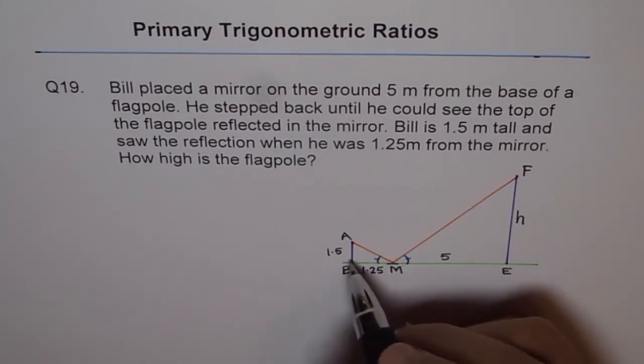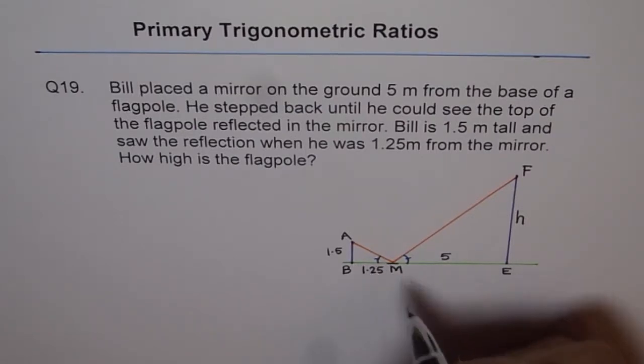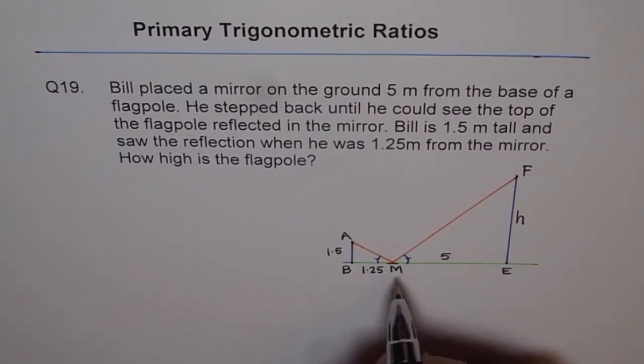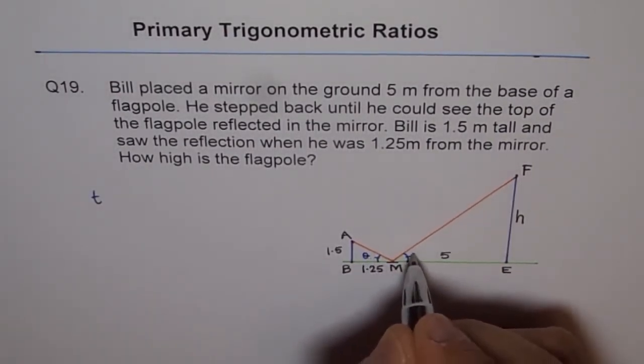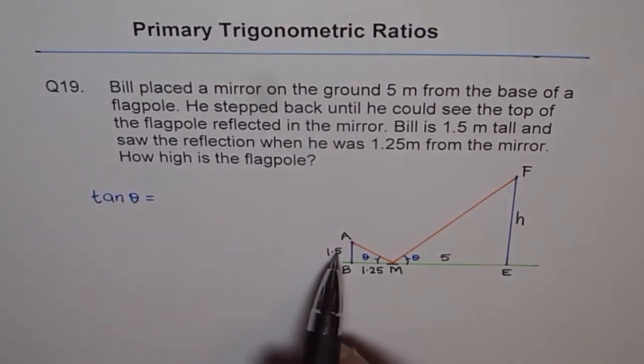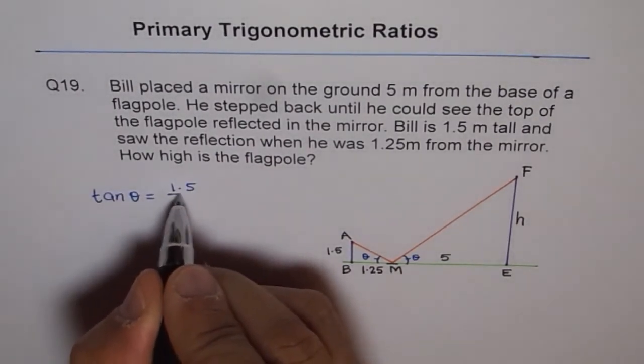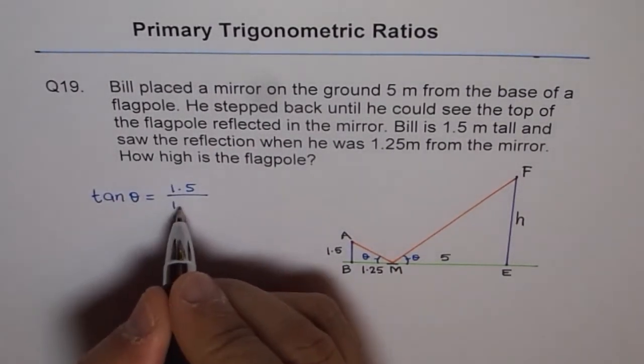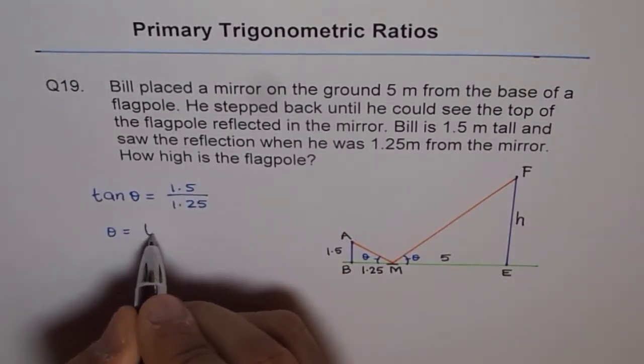From triangle ABM, we can find angle M using tan. Let's call this angle theta. This angle will also be theta. Tan theta equals opposite over adjacent, which is 1.5 over 1.25. Therefore, theta equals tan inverse of 1.5 over 1.25.